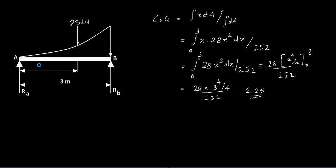Now you know the force is acting at 2.25 meter from A and the total force is 252 Newton. Taking moment about A, you have RA passing through A so no moments, 252 acting downwards at 2.25 meter creating a clockwise moment (negative), and RB acting at 3 meter upward creating an anticlockwise moment (positive).